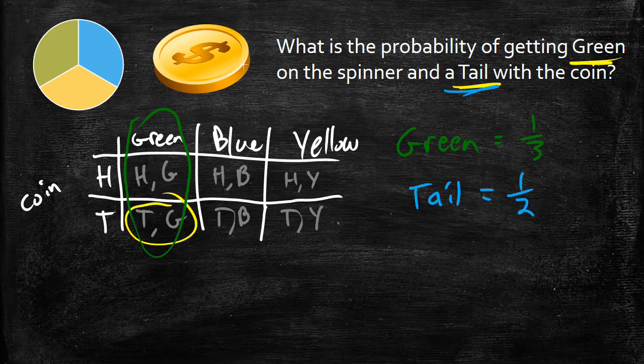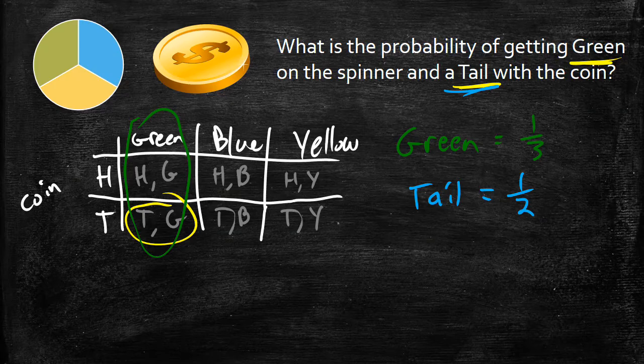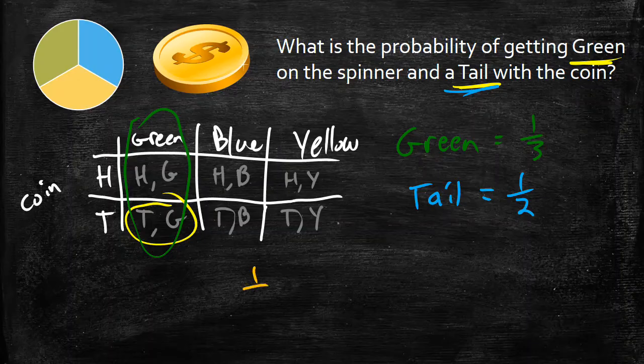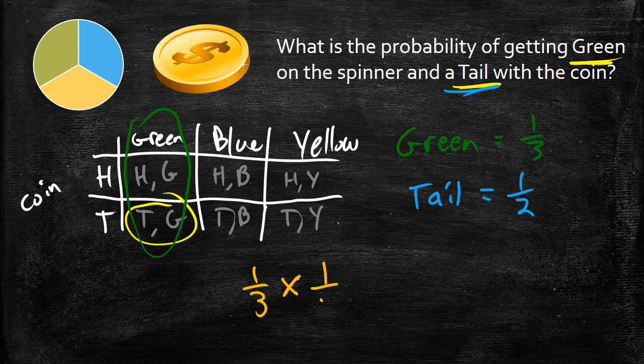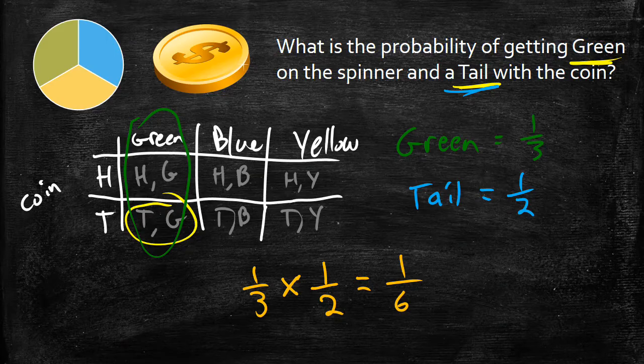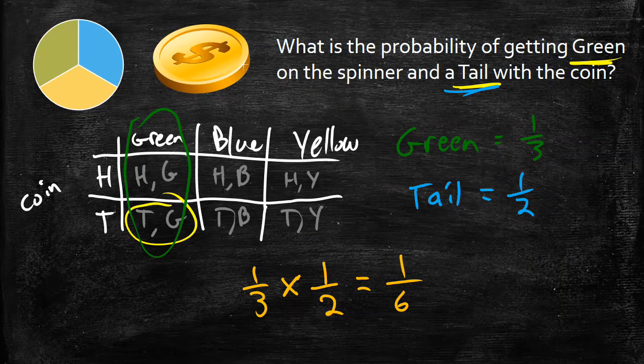Now the way that I can use this is I can use my knowledge from fraction multiplication here. I can do my probability of getting my first outcome, which is green, and go 1/3. I can multiply that by the probability of my second outcome, which is getting a tail, which is a half. I'll end up getting 1/6 because my top times my tops and my bottom times my bottoms give me 1/6. So the probability of getting a green on the spinner and a tail with a coin is 1/6.